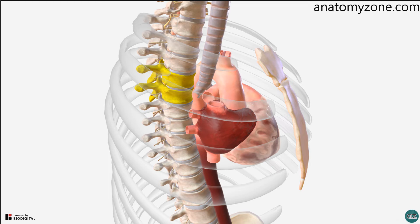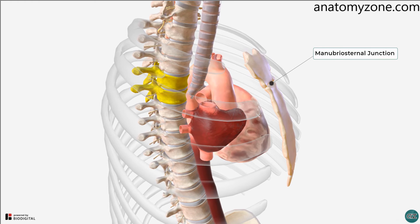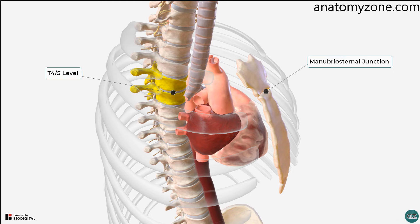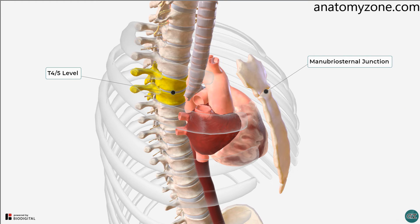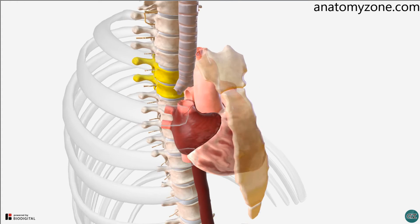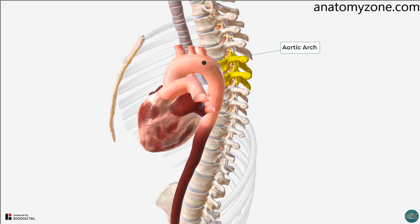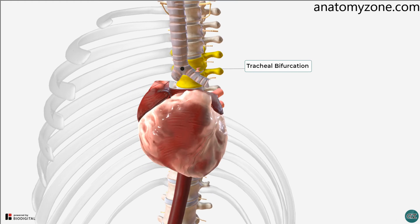Other examples of anatomical landmarks include the sternal angle of Louis, or the manubrio-sternal junction, which lies at the T4/5 level. This level determines the thoracic plane, an artificial horizontal plane which divides the superior mediastinum from the inferior mediastinum, and at which there are a few key anatomical landmarks, such as the start and end of the aortic arch, and the bifurcation of the trachea.